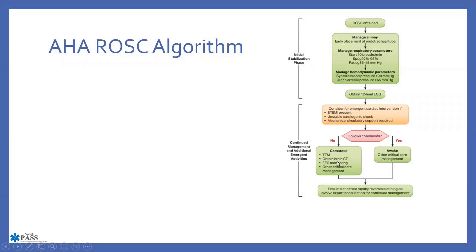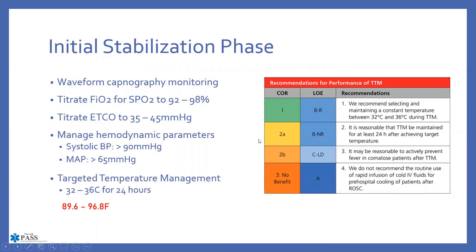For comatose patients, we're looking at targeted temperature management, brain CT, EEG, and other critical care management. I don't have true knowledge about exactly what is going on, but targeted temperature management and the other testing referred to are things I would presume are occurring behind the scenes. The initial stabilization phase, per the American Heart Association with targeted temperature management, includes things going on in the hospital that we can try to initiate in the field.